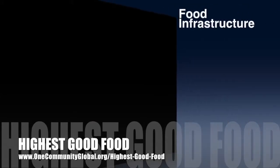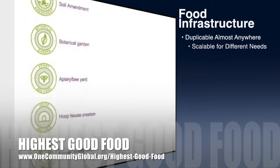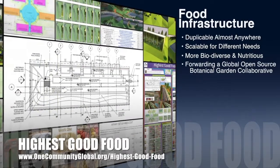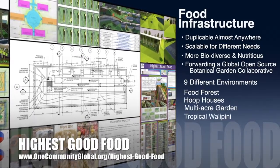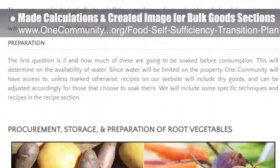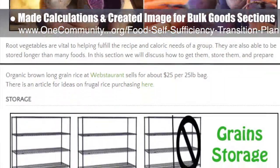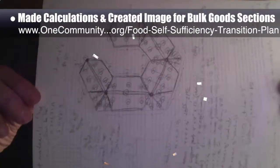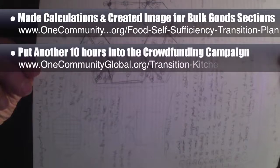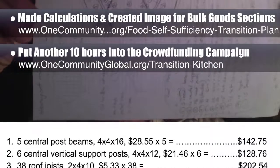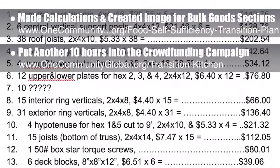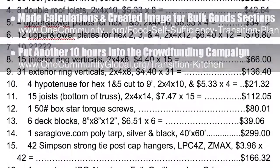One Community's approach to highest good food is duplicable almost anywhere, scalable for different needs, more biodiverse and nutritious, part of forwarding a global open source botanical garden collaborative, and includes nine different free shared and duplicable growing environments. This week, the core team did the calculations and created an image for the storage details for all bulk goods on the food self-sufficiency transition plan page. We also put another 10 hours into the crowdfunding campaign we are developing — this week's focus was on hexayurt framing materials, watershed, coated torque screws, tarp and deck block for the transition kitchen structure. We also researched joist hangers, tarps, and LED string lights.